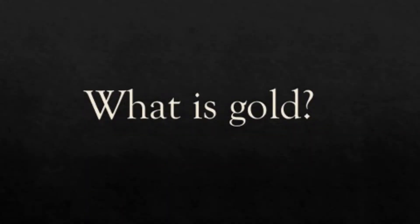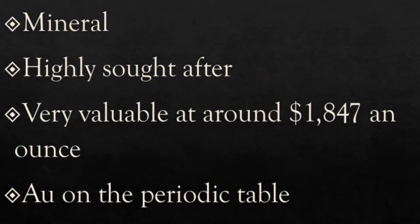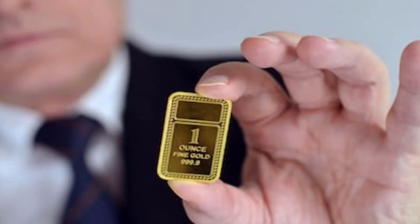What exactly is gold? It is a mineral and as I am sure you all know it is highly sought after. This is due to its high value per ounce. As of recording this video the price per ounce of gold is $1847. You can see in this picture on the left what one ounce of fine gold looks like and how it is a relatively minuscule amount for such a high value.